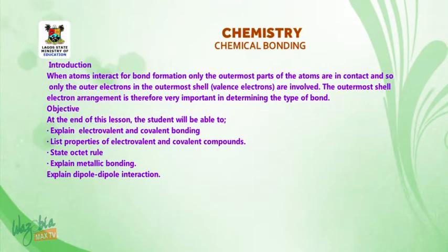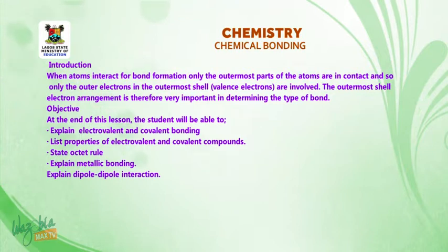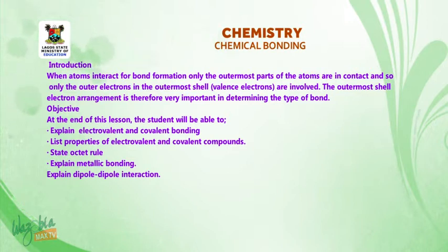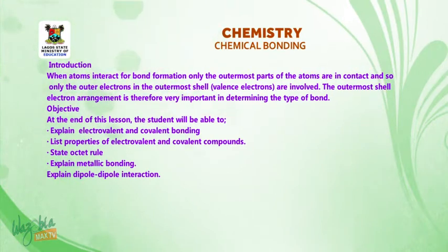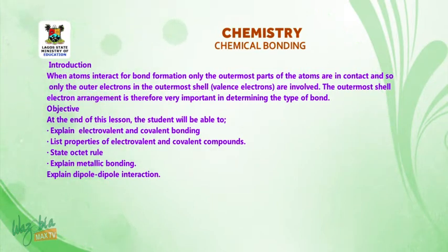Introduction. When atoms interact for bond formation, only the outermost part of the atoms are in contact, and so only the outer electrons in the outermost shell are involved. The outermost shell electron arrangement is therefore very important in determining the type of bond.